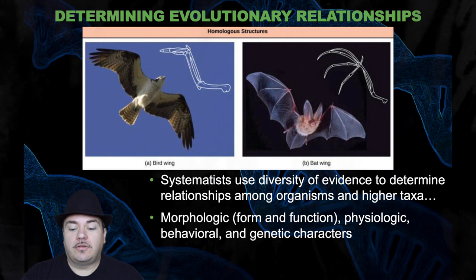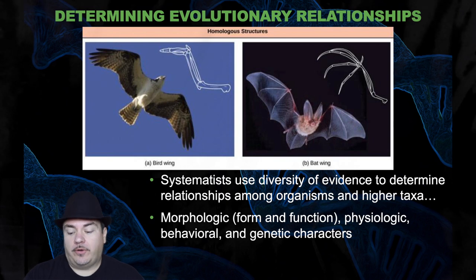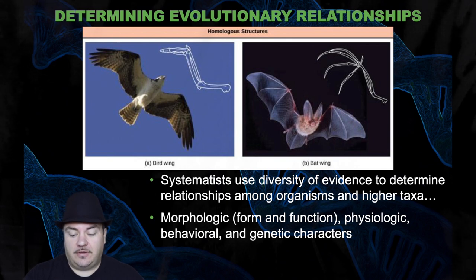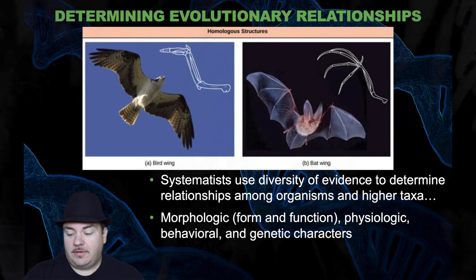In order to determine evolutionary relationships, we use diversity of evidence to determine relationships among organisms and higher taxa. We use many different sources of information: morphologic — form and function — physiologic, behavioral, and genetics.